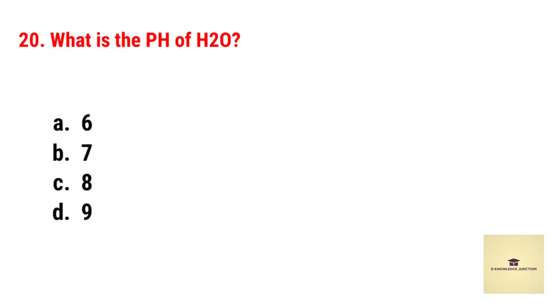What is the pH of H2O? Correct answer is 7 (neutral).